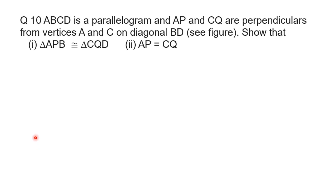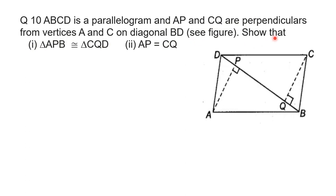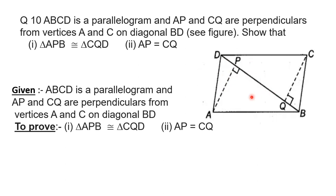Question No. 10 says: ABCD is a parallelogram and AP and CQ are perpendiculars from vertices A and C on diagonal BD. Show that triangle APB is congruent to triangle CQD, and second part, AP is equal to CQ. By the figure, we write that ABCD is a parallelogram (given) and AP and CQ are the perpendiculars from the vertices A and C on the diagonal BD.